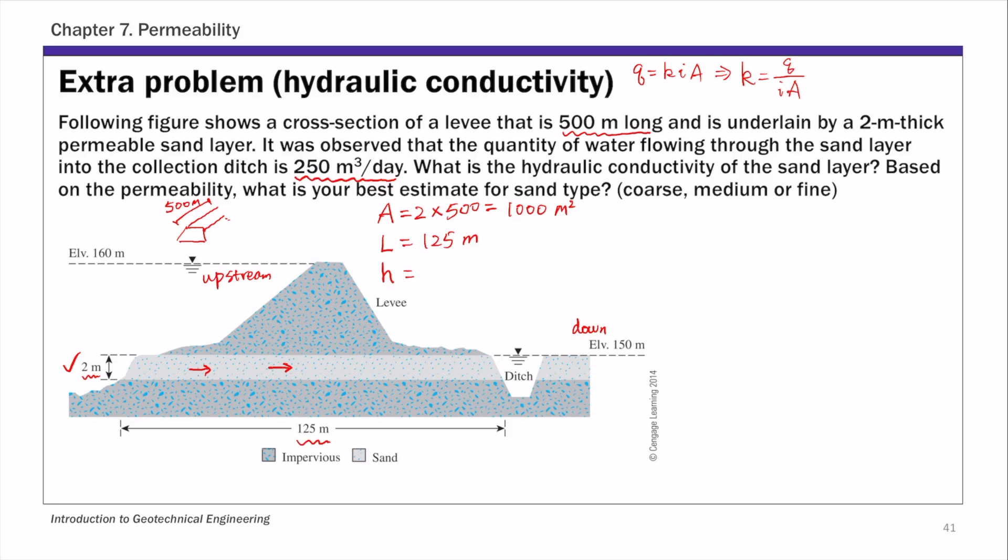This head loss for this levee problem is the head loss from upstream to downstream. It's the difference between upstream and downstream water table: 160 minus 150, so that's 10 meters total head loss. The hydraulic gradient i is h over L, which is 10 over 125, equals 0.08, a dimensionless number.